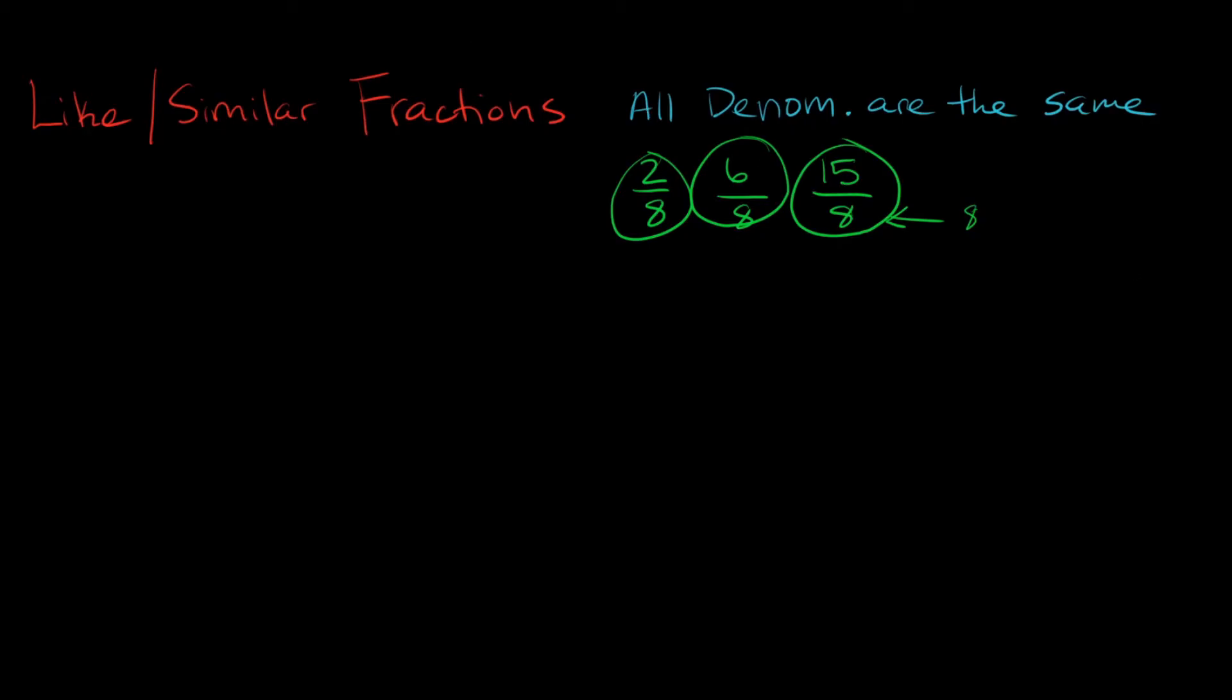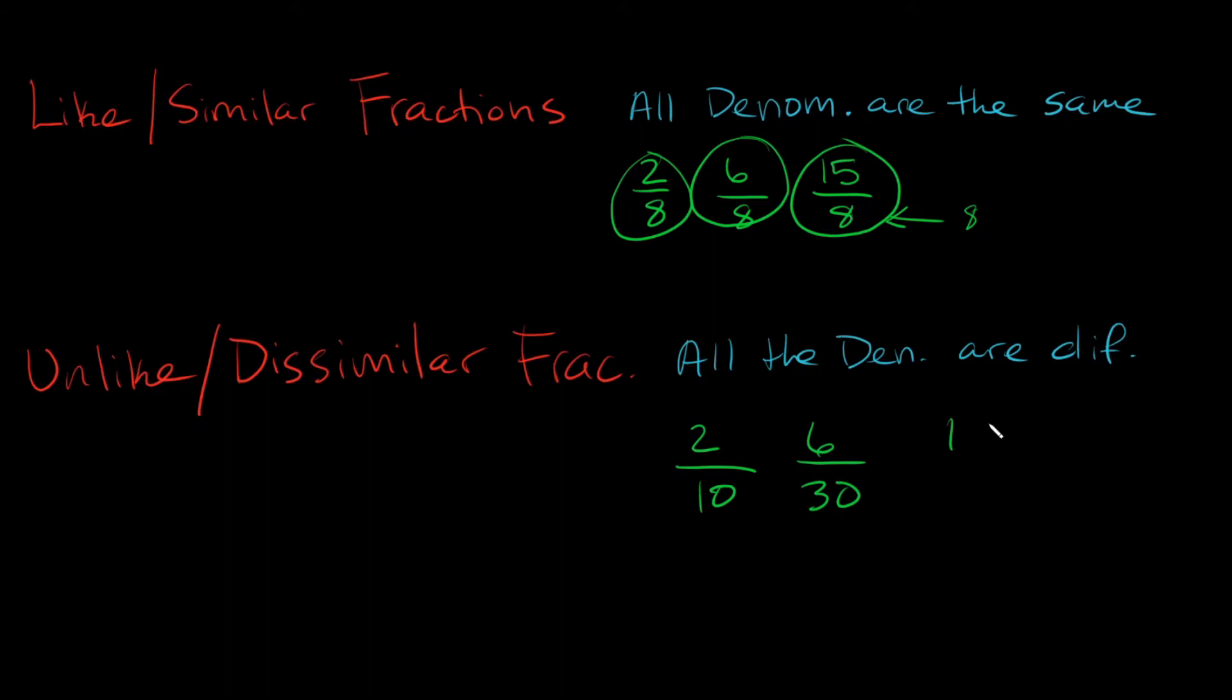On the other hand, we also have unlike fractions, or dissimilar, dissimilar fractions. And they're literally just the complete opposite of these. So this is when all the denominators are different. All the denominators are different. For example, let's write the same ones. 2 over 10, and 6 over 30, and 15 over 5. So all these three fractions would be considered unlike fractions, or dissimilar fractions, because they all have different denominators. Those are all different.